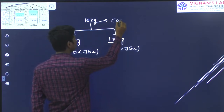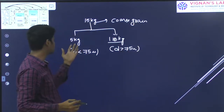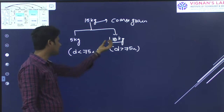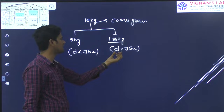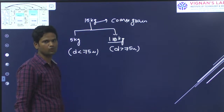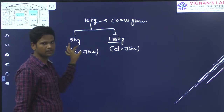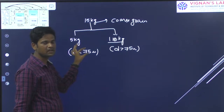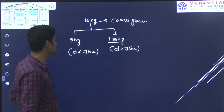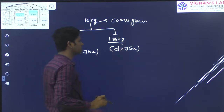Up to this range we can name it as coarse-grained soil. Now if instead 10 kg of the soil mass has size less than 75 microns and 5 kg is greater than 75 microns, then the majority — more than half — is less than 75 microns, and we classify this soil as fine-grained soil. That fine-grained soil story we will see in subsequent slides. Based on the 75 micron sieve, how much amount is retained determines coarse or fine.